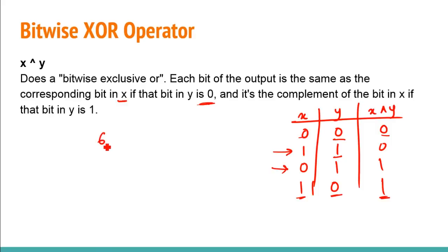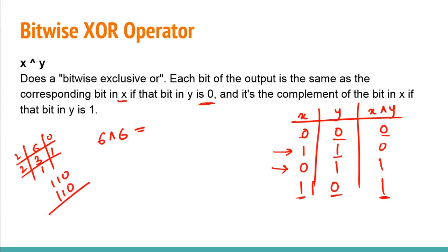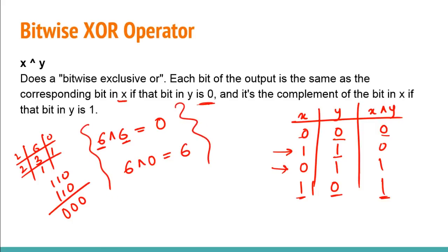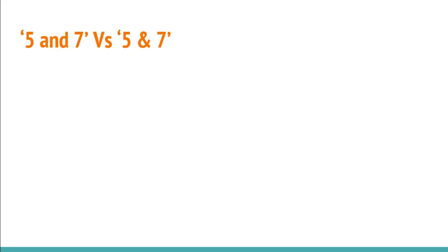Let's look at an example: 6 XOR 6. The binary of 6 is 110. Since both values are identical, every bit pair is the same, so the output is 000 — which is zero. This illustrates two key points: XOR of any variable with itself is always zero, and XOR of any variable with zero gives the variable itself.